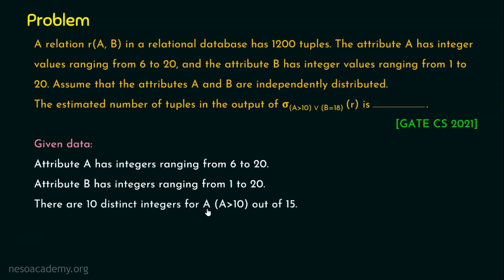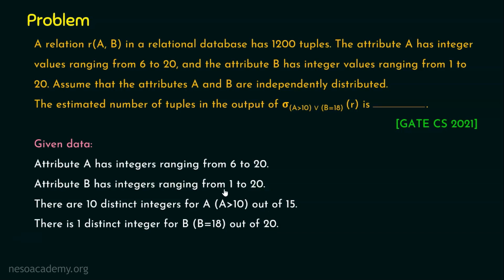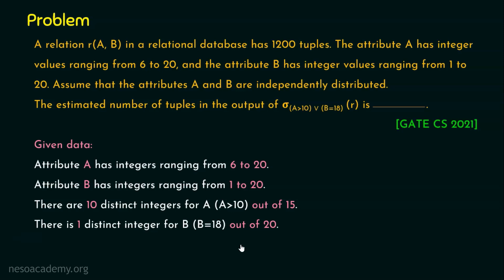There are 10 distinct integers for attribute A satisfying A greater than 10. From the range 6 to 20, greater than 10 means from 11 to 20 — that is 11, 12, 13, 14 up to 20, giving 10 distinct integers. For attribute B, there is one distinct integer for B equal to 18 out of 20 possibilities. So for A, out of 15 numbers, we focus on 10 values, meaning the fraction is 10 upon 15.